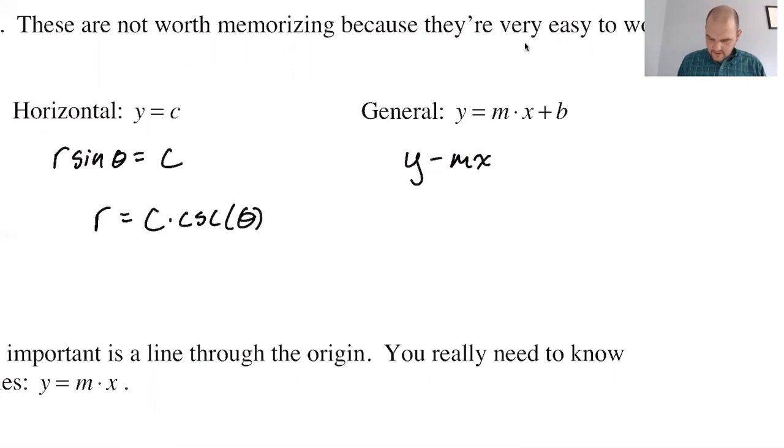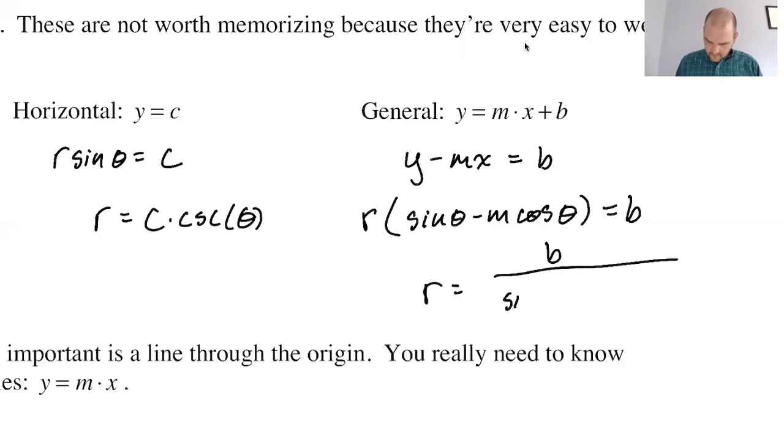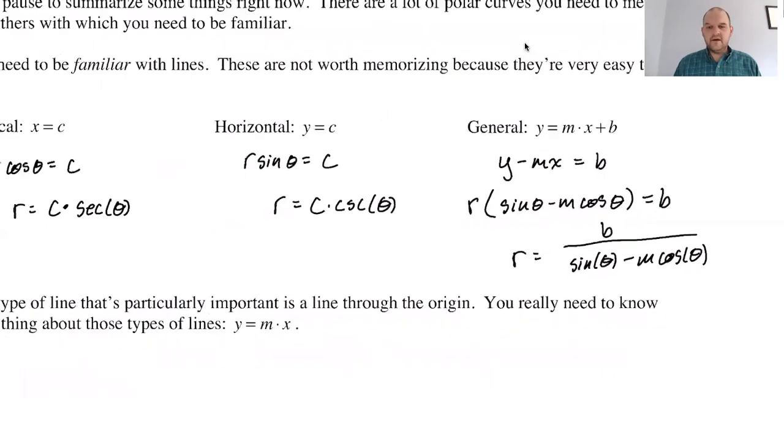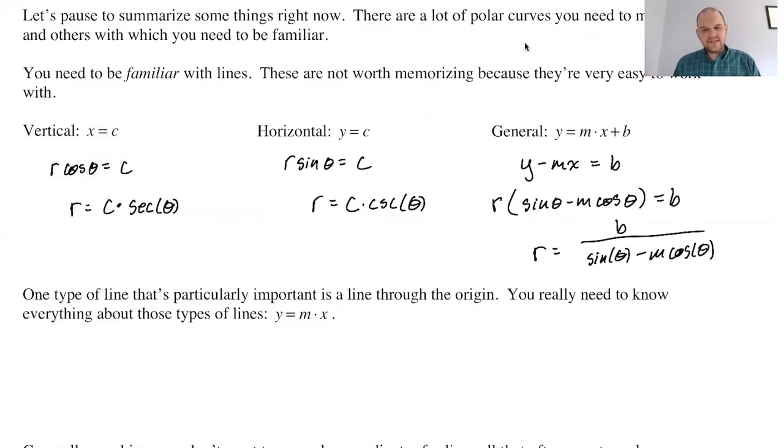You rearrange it a little bit, and then I'm going to factor the r out immediately. So y is r*sin(θ), so sine of theta, and then minus m, and then x is r*cos(θ), but I'm factoring the r out, so just cosine equals b. So we get r equals b over (sin(θ) - m*cos(θ)). I don't think these are worth memorizing, but you could. They're generalizations. Generalizing is never really bad.